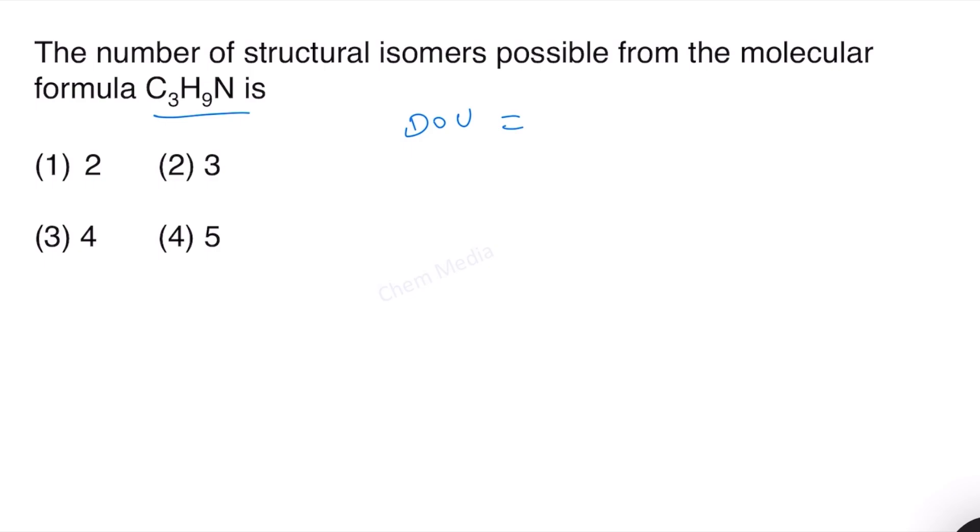Degree of unsaturation is equal to 1 plus number of carbon atoms plus number of nitrogen atoms by 2 minus number of hydrogen atoms by 2.